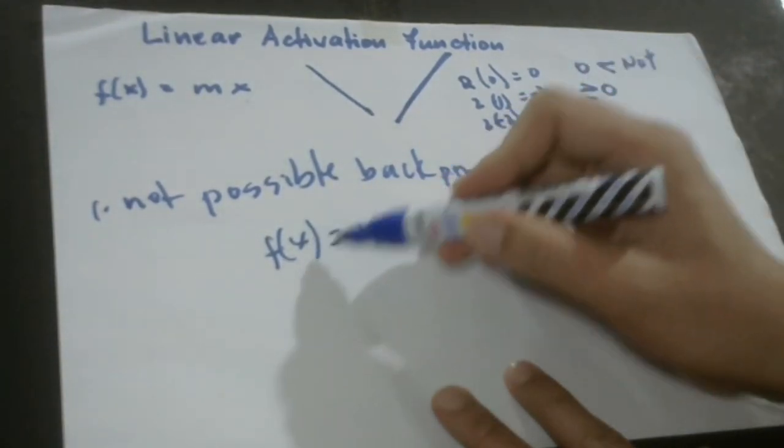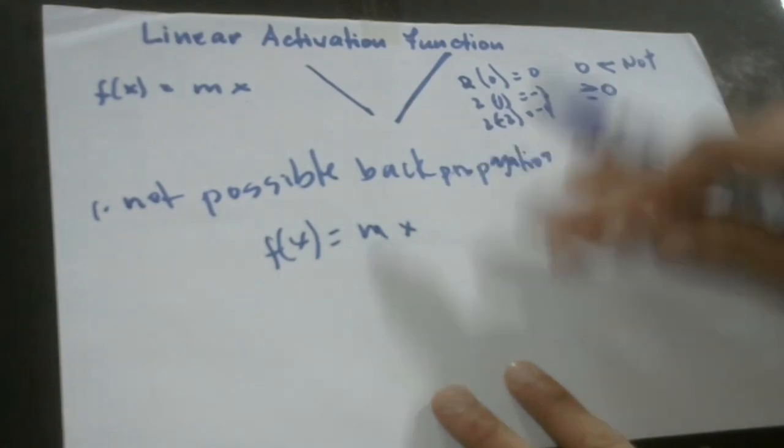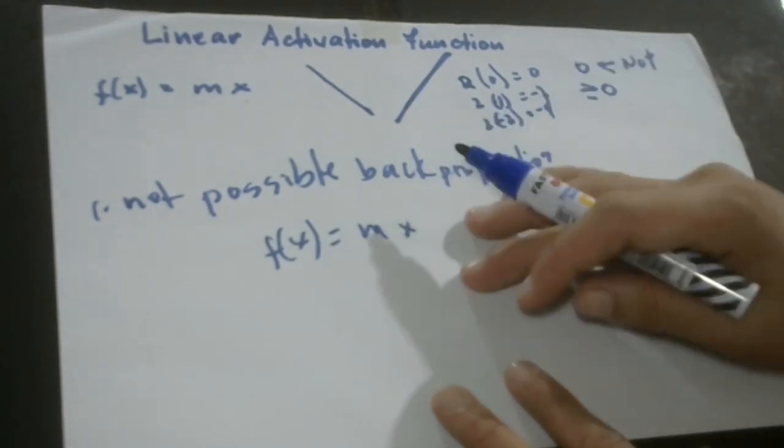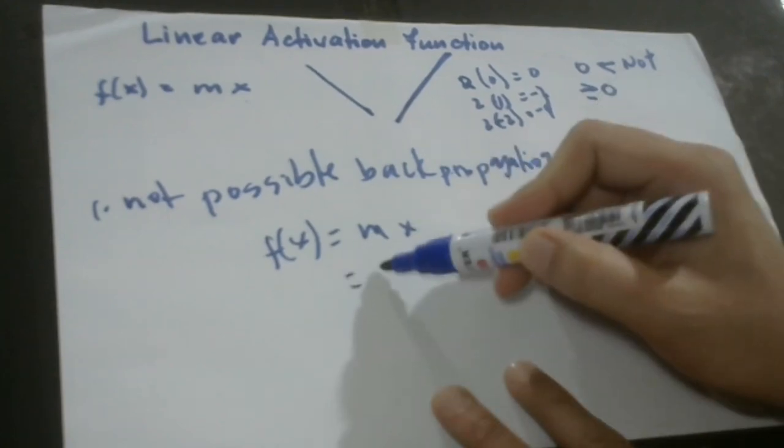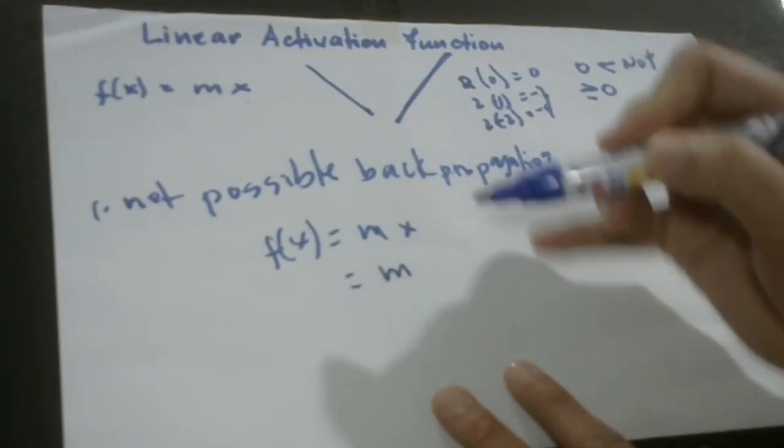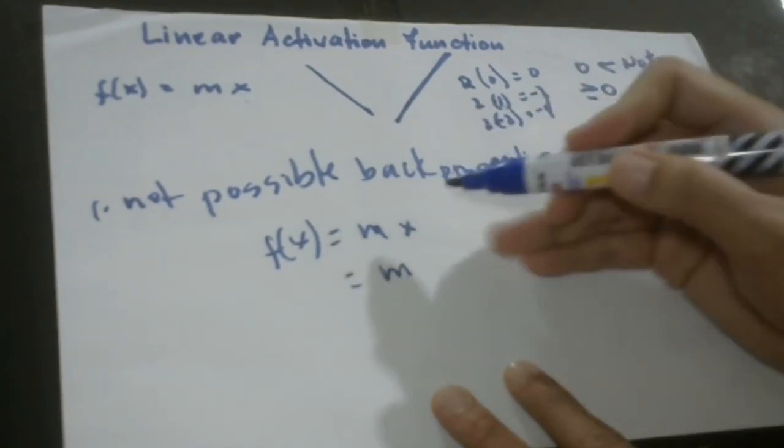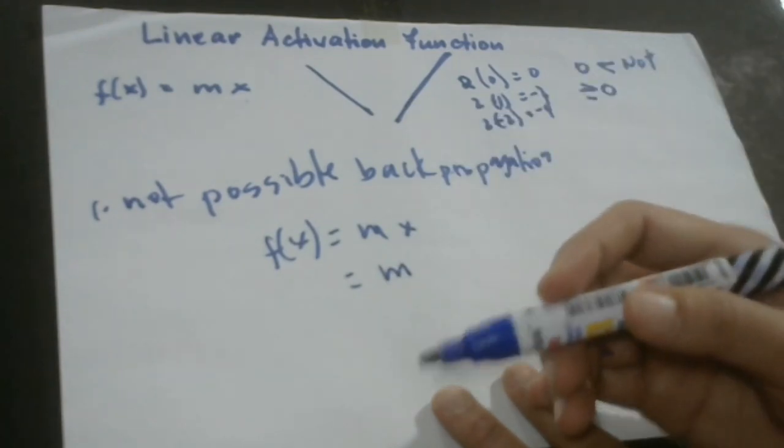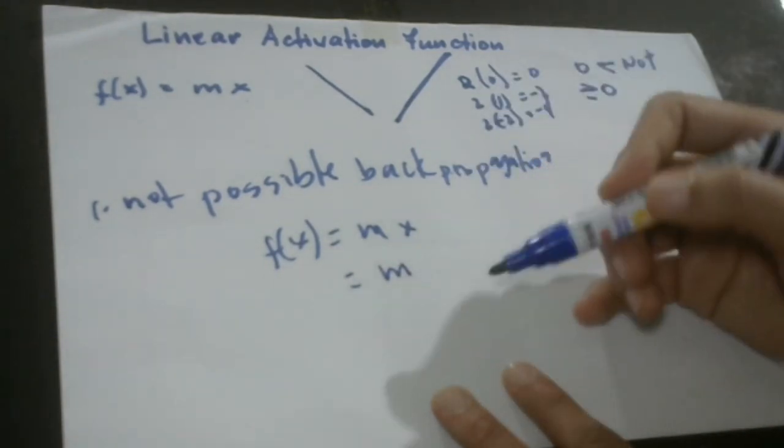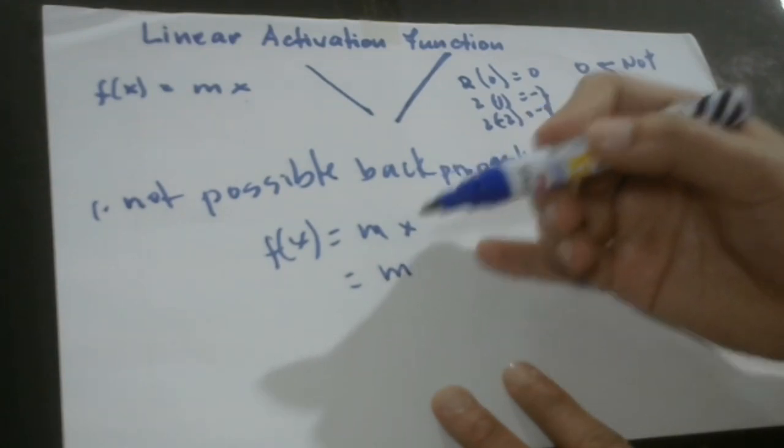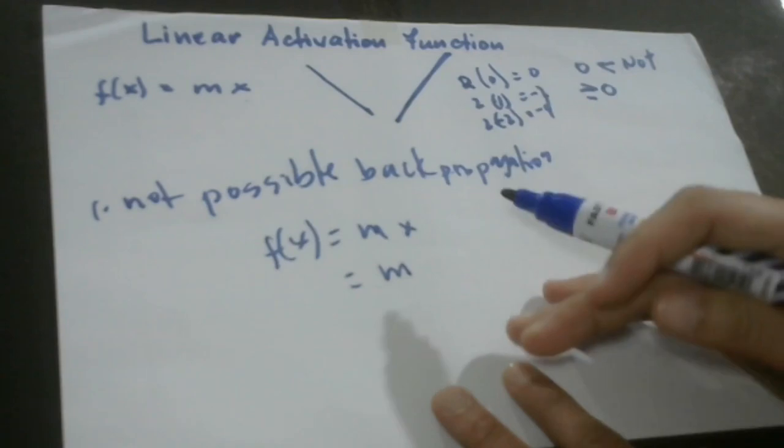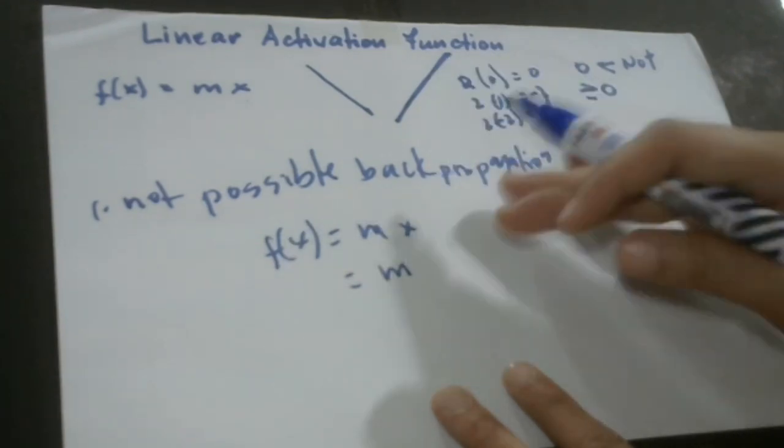So if we're going to take the derivative of this function, this one would result to a constant. So this would just become m. If you don't know what a derivative or how to get a derivative is, I suggest you first review derivatives of calculus to understand properly what we mean by this.